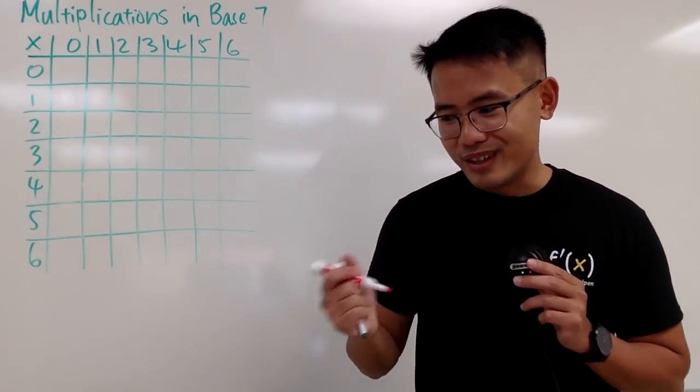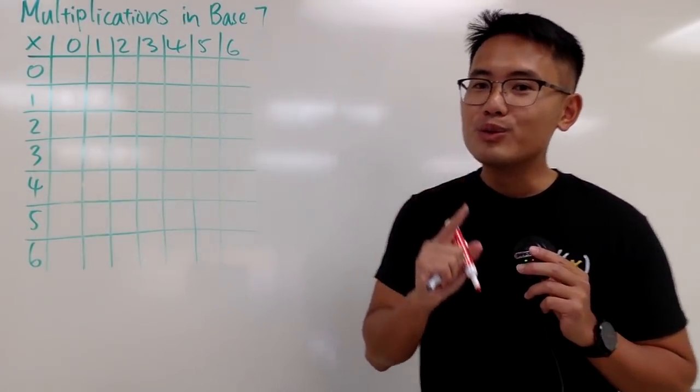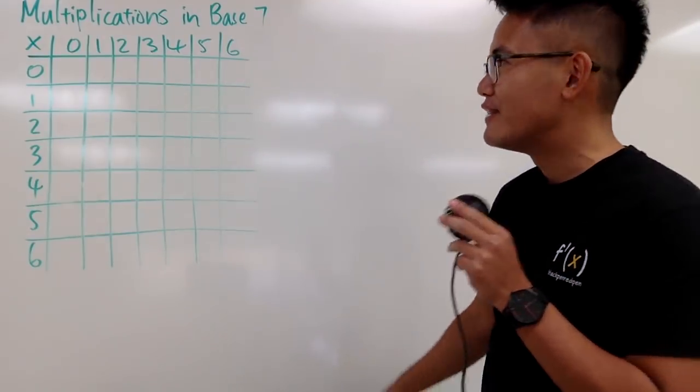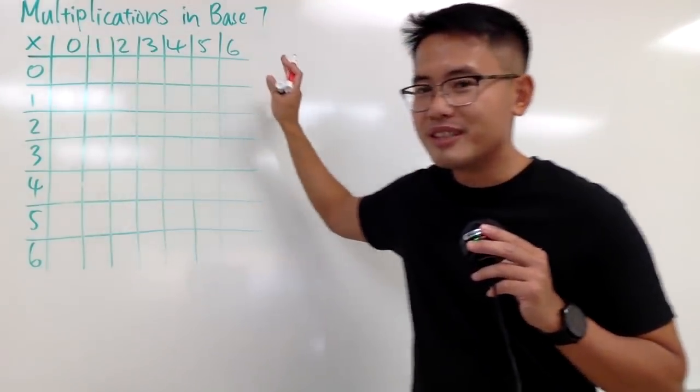Okay, hopefully after this video we can still keep our sanity. We are going to do the times table in base 7. And as we all know, in base 7, we only have the digits from 0 to 6.